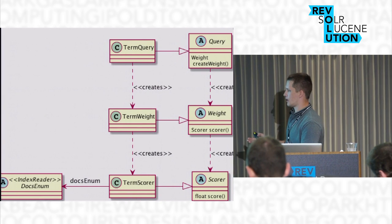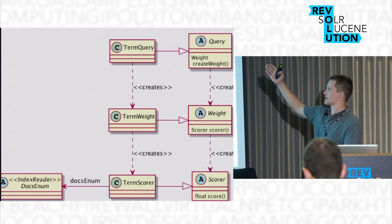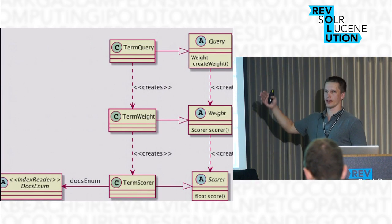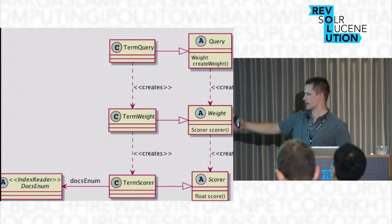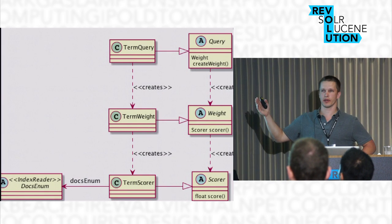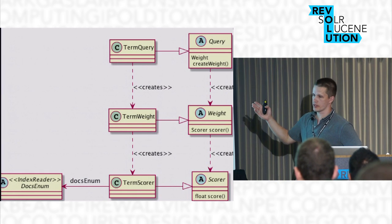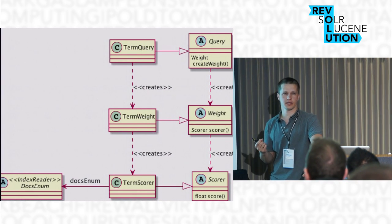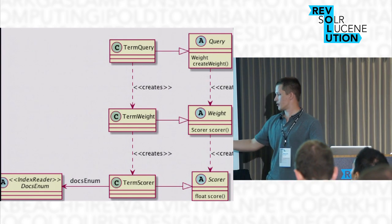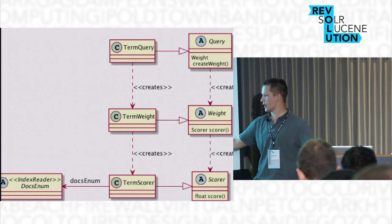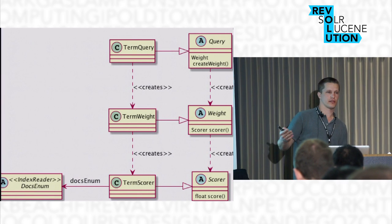Here are the core classes which show where the scorers come from. We have abstract classes: Query, Weight, and Scorer. They create each other — Query creates Weight, Weight creates Scorer, and so on. Any concrete query provides implementations for these three classes. Here I show the TermQuery, which is a fairly basic building block for search queries. The TermScorer, which is created by TermQuery, relies on a document enumerator which is obtained from the index reader.